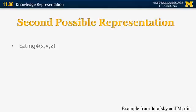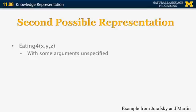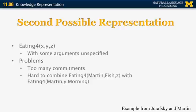There's a second possible representation: we always represent all eating events as instances of eating-four and just leave some of the arguments unspecified. So if we only know 'Martin ate', we say that y and z are unspecified. However, this has problems — there are too many commitments we have to make, and it's very difficult to combine an eating-four where argument z is missing with an eating-four where argument y is missing. We cannot combine those two into an eating-four instance with both fish and morning specified.